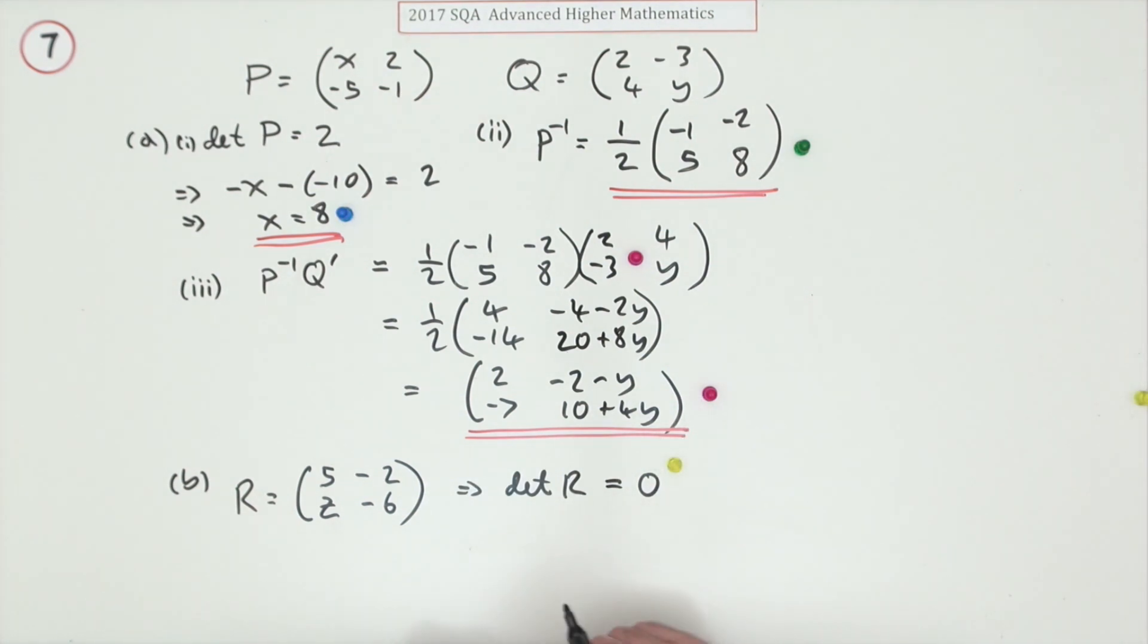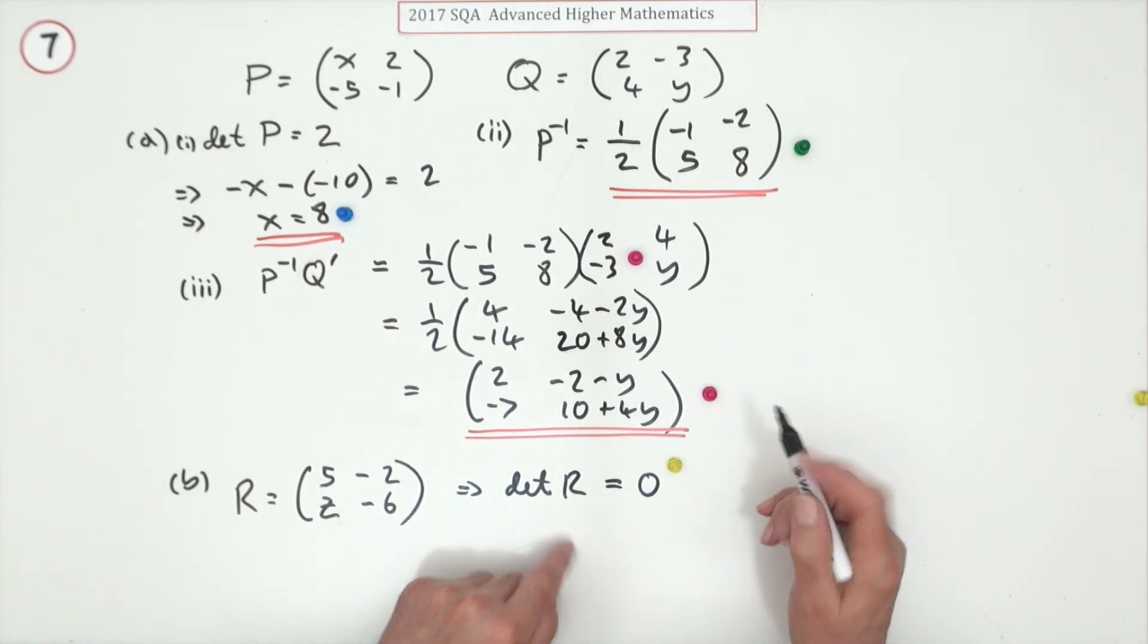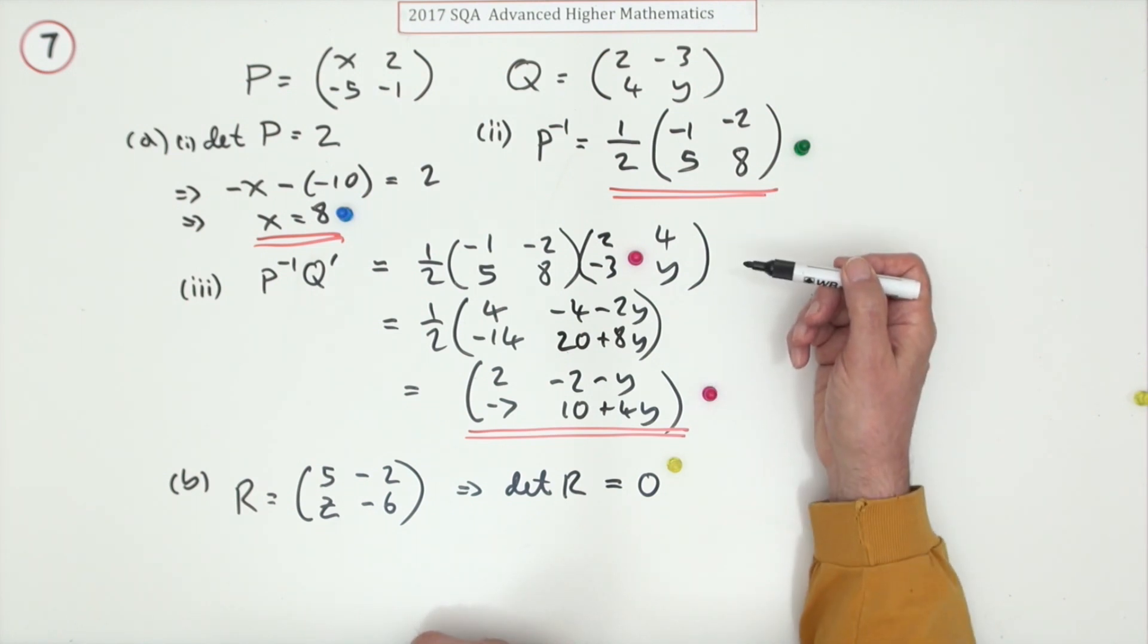Now if the determinant is zero, that means the product of the main diagonal elements minus the product of the other diagonal elements equals zero. There are other ways: in general, if a matrix has a determinant of zero, it's because one row is a multiple of another. There's a redundancy, or one row is a linear combination of other rows.